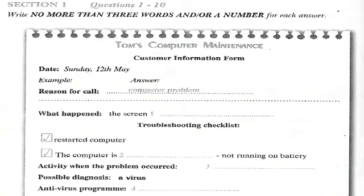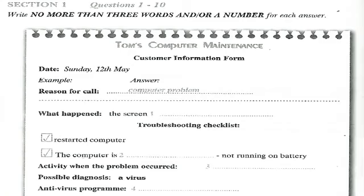There is an example that has been done for you. On this occasion only, the conversation relating to this will be played first. Hello, Tom's Computer Maintenance, how may I help you? Hello, I seem to have a problem with my computer. It's really inconvenient too because I have a deadline tomorrow I'm rushing to meet, and suddenly the screen went blank — a blank blue screen. The answer is 'computer problem', so the reason for the phone call has been filled in for you. Now we shall begin. You should answer the questions as you listen because you will not hear the recording a second time. Listen carefully and answer questions one to four.